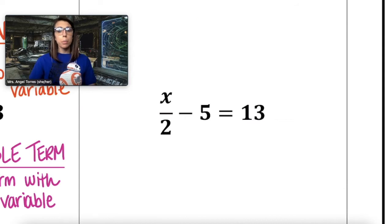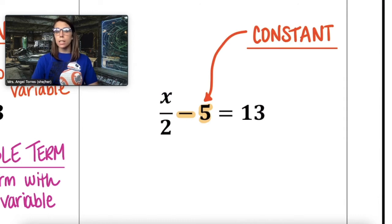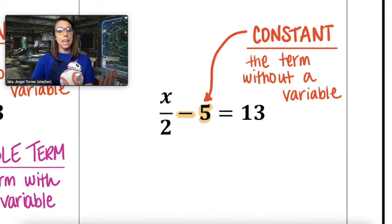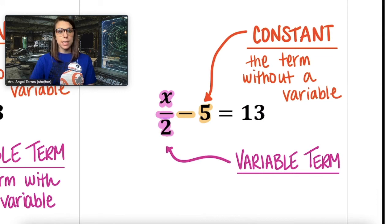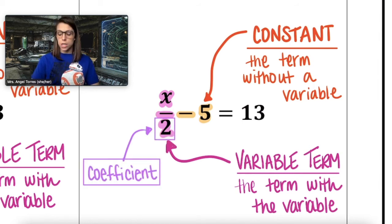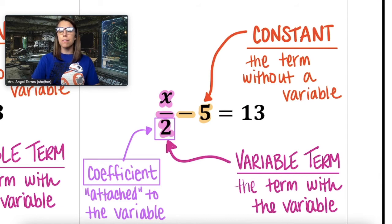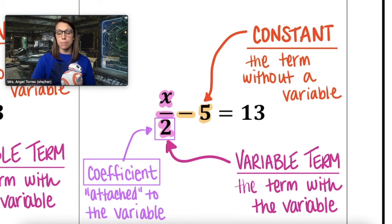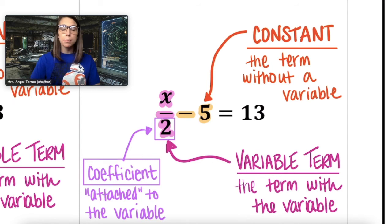Let's try identifying those parts in our second equation: x divided by 2 minus 5 equals 13. Our constant is minus 5, thinking of that as negative 5 — the term without the variable. The variable term is x divided by 2, because that's the term that has the variable x. The coefficient is still 2 because it's attached to the variable, but this 2 is in the denominator, hence showing division. If you can identify these parts of a two-step equation, solving becomes very simple.